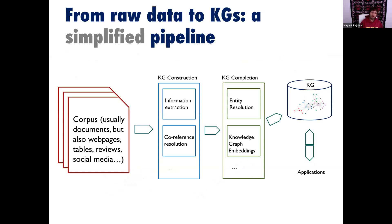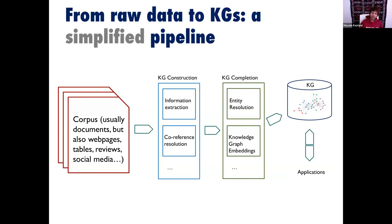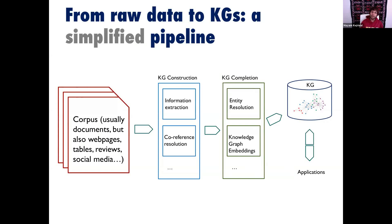To summarize the pipeline: we start with the corpus, do knowledge graph construction — which itself involves multiple steps — then knowledge graph completion, and finally get the knowledge graph. It may be incomplete and noisy, but with the right application like search or recommendation, you can work with a noisy knowledge graph. You don't need a perfect one. Towards the end of this talk, I'll show how this is being used right now for COVID-19.